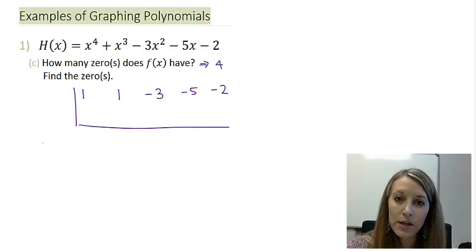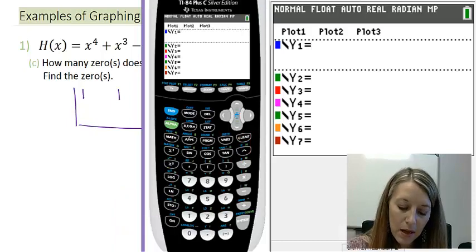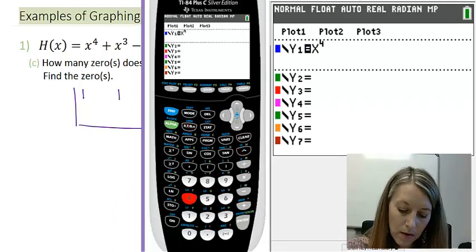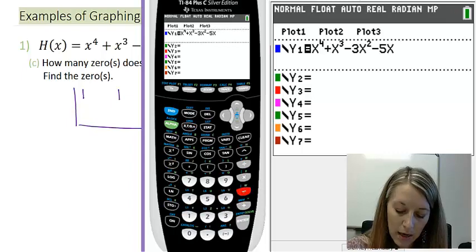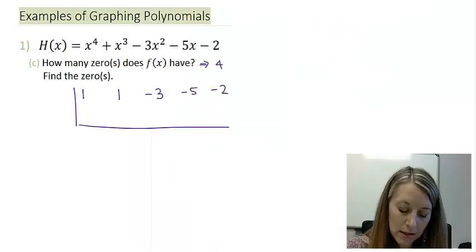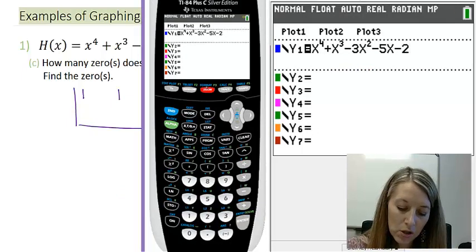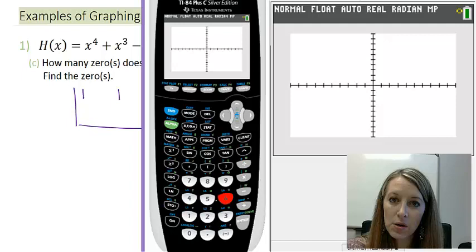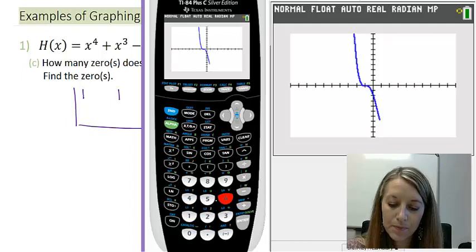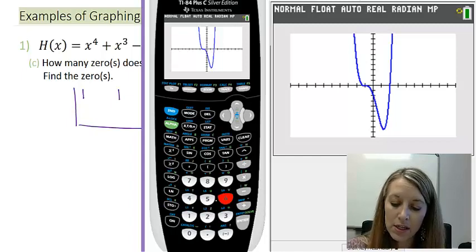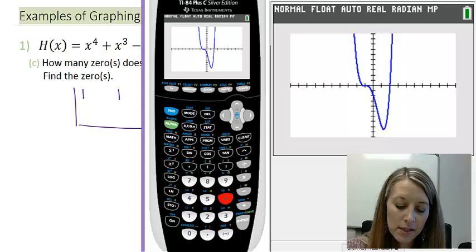But right now, if it doesn't give us any place to start, I suggest using the calculator so you don't have to play the guess and check method over and over again. So pulling my calculator up and typing in my function, x to the fourth plus x to the third minus 3x squared minus 5x minus 2. Making sure I got that right, x to the fourth, x cubed, negative 3x squared minus 5x minus 2. Let's graph this on the standard window. And again, I'm looking for the zeros, which means I'm looking for my x intercept. I should be finding four of them. I see two. I see one at negative 1 and I see one at positive 2.